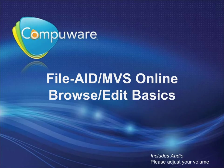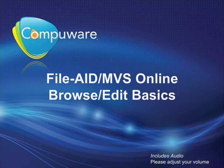Welcome to the FileAid MVS Online Browse and Edit Basics module. Here you will learn about the features and functions of the FileAid editor. Many of the commands available are similar to those found in the ISPF editor, but have extended capabilities that give you more power. These supported file types are extended to include VSAM, IAM files, CA Panvolet and CA Librarian files, and HFS files.